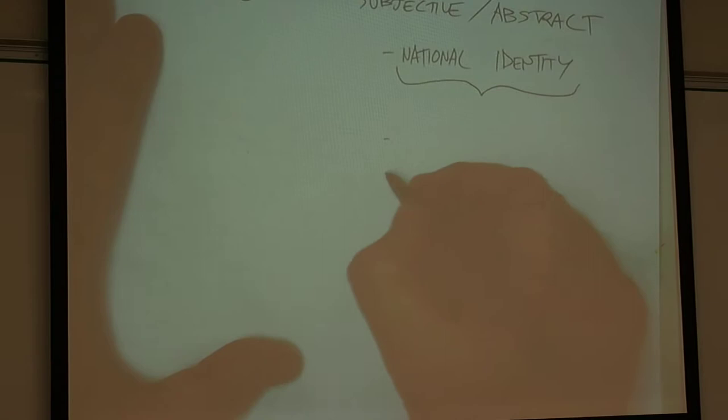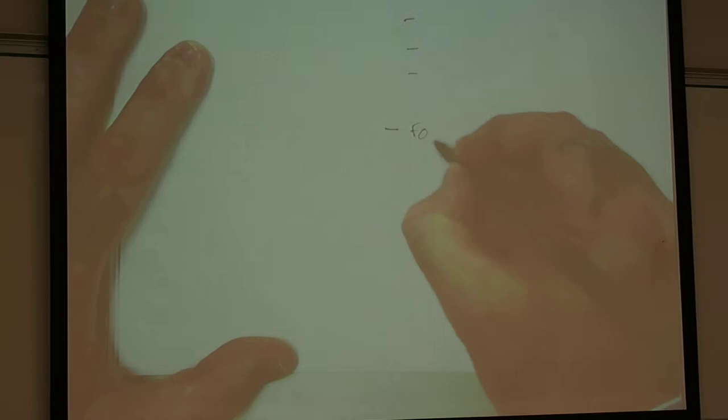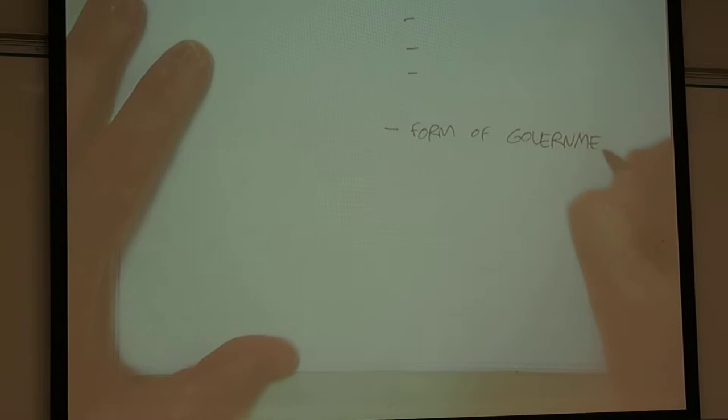At this point, I would record the student responses and input. Then we might move on to another subjective abstract interpretation of the American flag. It also stands for a form of government. Here I would solicit examples from students as to what is the meaning or the nature of that government, and typically we'll find multiple different perspectives.